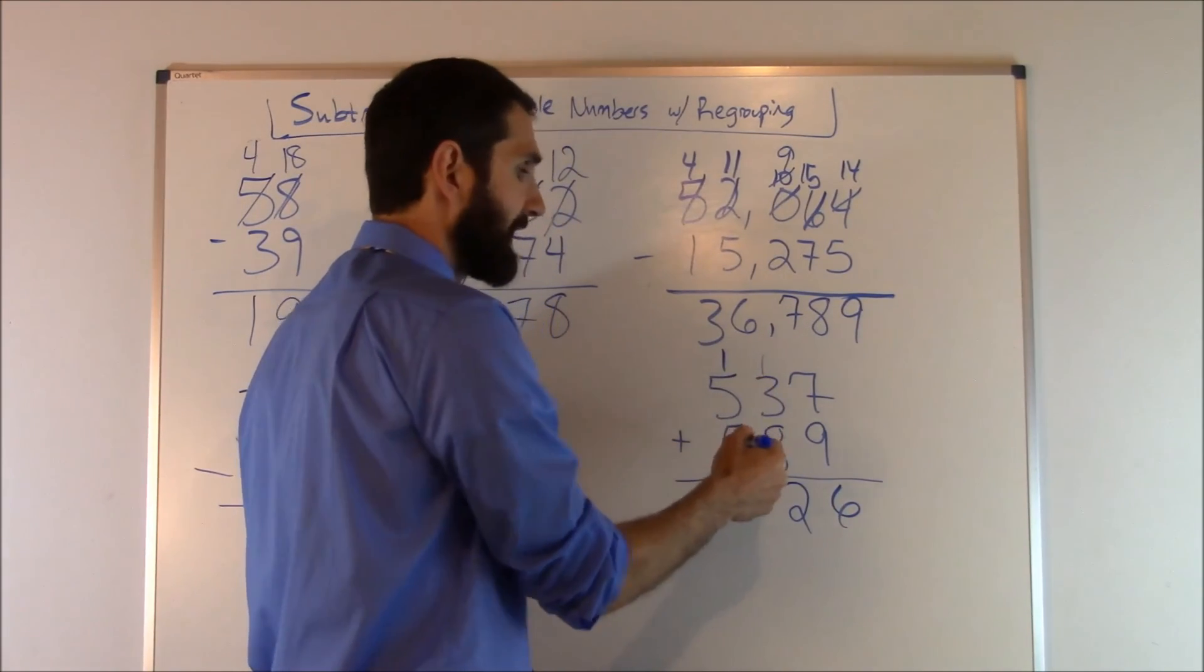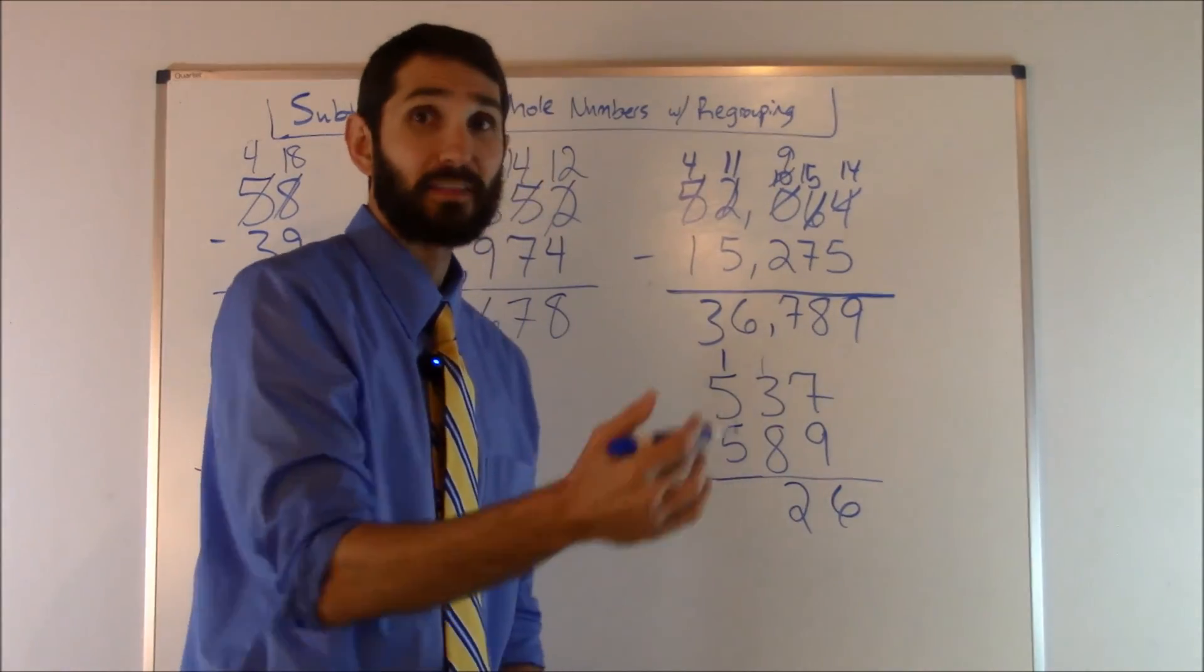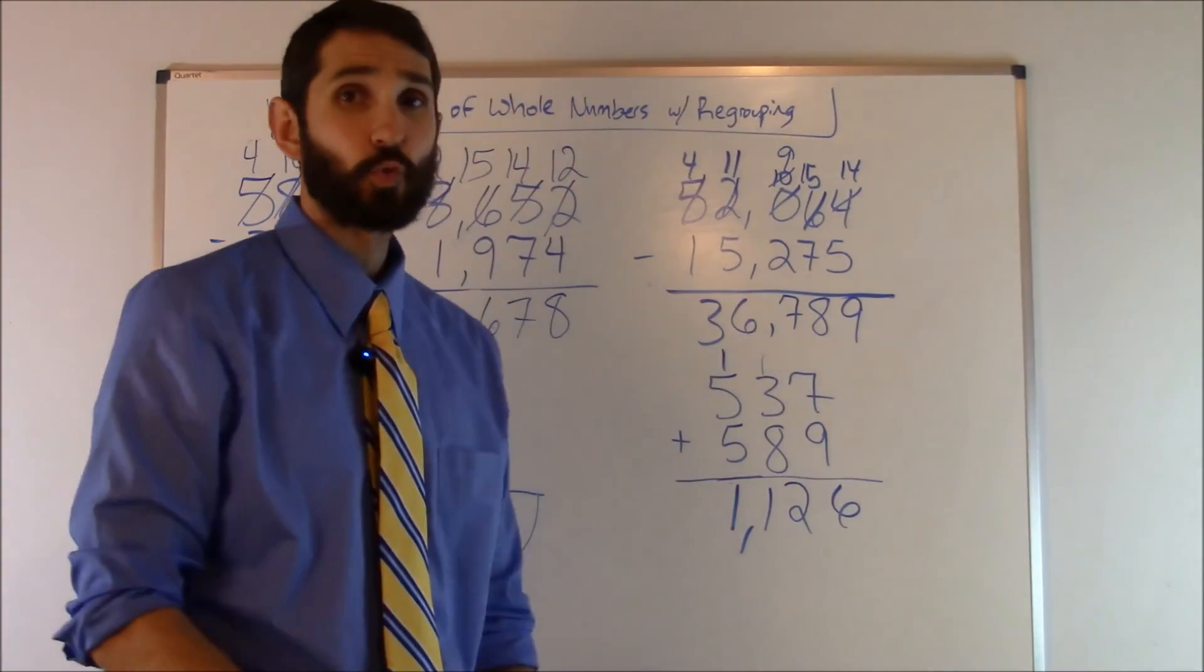And then five plus five is 10 plus one is 11. We have no numbers left so we take the whole 11 down. That's going to be 1,126.